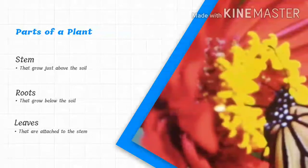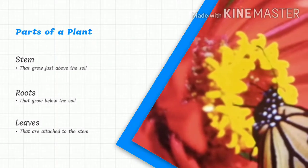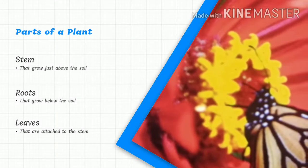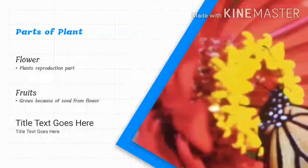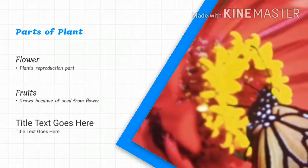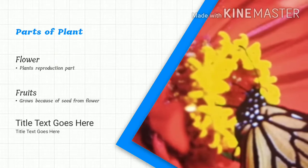Parts of a plant: Stem that grows just above the soil, Roots that grow below the soil, Leaves that are attached to the stem, Flowers - the plant's reproduction part, and Fruit grows because of seeds from the flower.